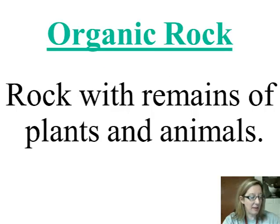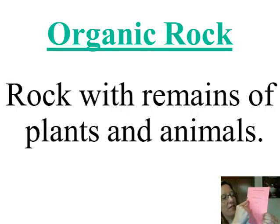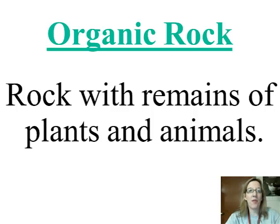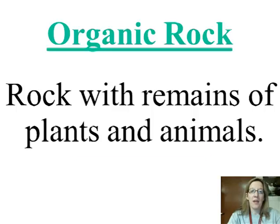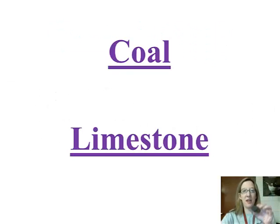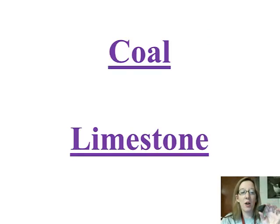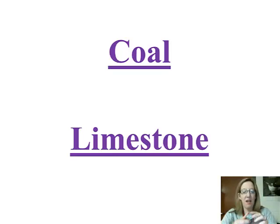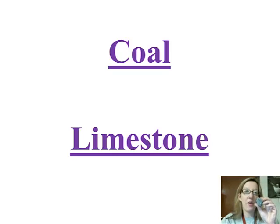Now, there are three kinds of sedimentary rock. The first is organic rock. Organic rock is rock that forms from the remains of plants and animals — any time the sediment is mainly plants and animals, you have an organic rock. A common example is coal, which was made from plants and animals being compacted and cemented over thousands of years. Another example we'll look at in class is a type of limestone, which is also considered an organic rock.